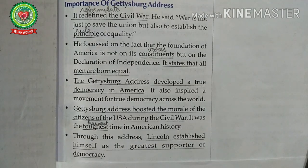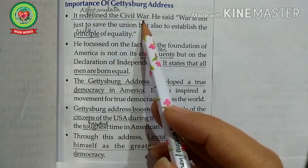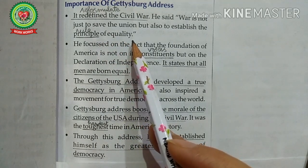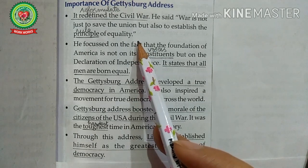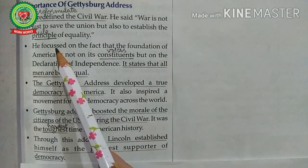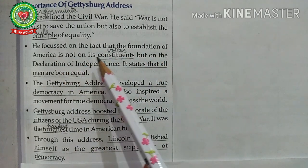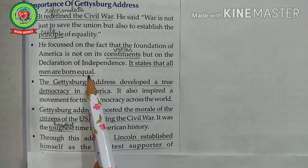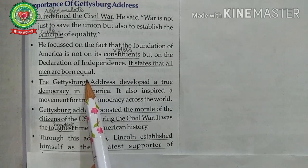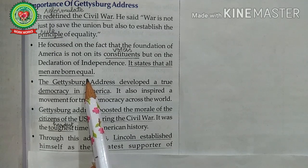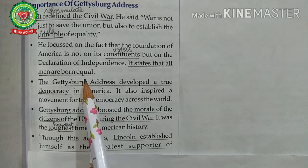Reading the importance of the Gettysburg Address from the book: It redefined the Civil War — redefine means reformulate. Lincoln said the war was not just to save the Union but also to establish the principle of equality; the Civil War was not about slavery only but about making the Union whole. It stated that all men are born equal. He focused on the fact that the foundation of America is not on its constituents — constituents means voters — but on the Declaration of Independence. In the Gettysburg Address, Abraham Lincoln invoked the principles of human equality contained in the Declaration of Independence and connected the sacrifices of the Civil War with the desire for a new birth of freedom, as well as the preservation of the Union created in 1776 and its ideal of self-government.